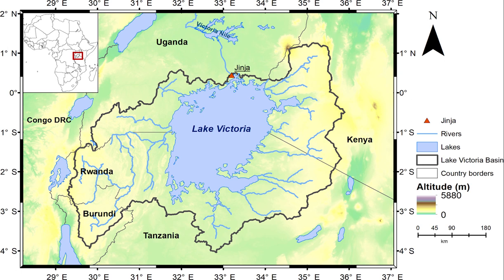Lake Victoria receives 80% of its water from direct precipitation. Average evaporation on the lake is between 2.0 and 2.2 meters per year, almost double the precipitation from the riparian areas.